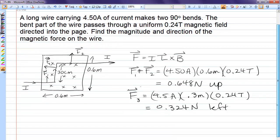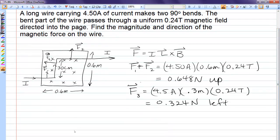So we're essentially adding two forces, one up, one left. So the one up is 0.648, and the one left is 0.324. And so the net force points up like this.